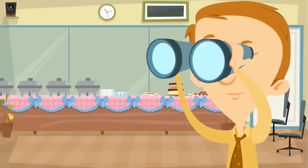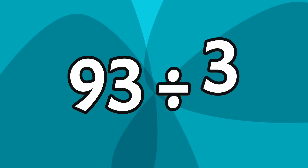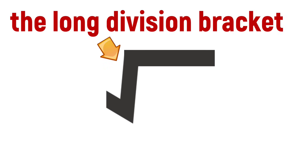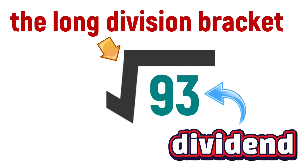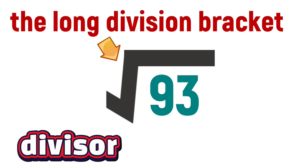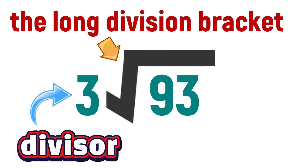Let's try another one. How about 93 divided by three? Let's set up 93 divided by three. We start with the long division bracket. We put the dividend — which is 93 — inside the bracket. That's the big number we're splitting up. Then we put the divisor — which is three — right in front of the bracket. The divisor is the number of groups we're splitting the dividend into.